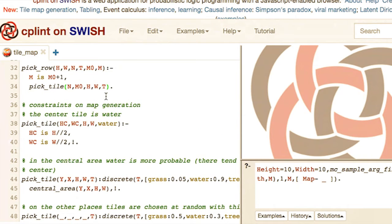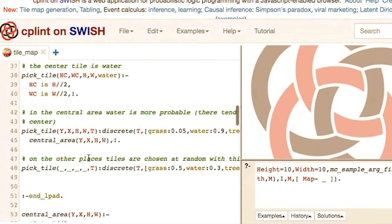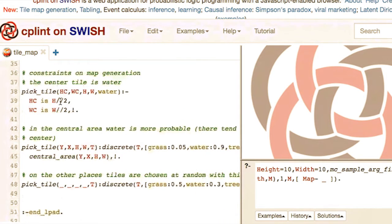It may be different in different runs. In this case, for example, to generate a map, we want to generate a map which tends to have a lake in the center. In particular, we want to generate a map where the center tile is always water, and the tiles around it are more likely water than others. In this case, pick tile is defined by three clauses, the first of which is a deterministic clause.